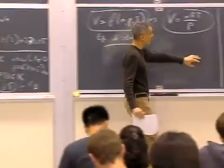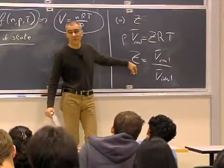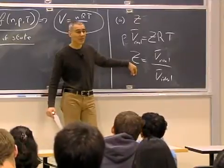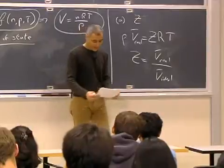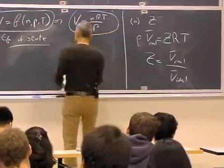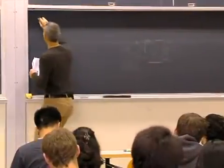And you can find these compressibility factors in tables. You want to know the compressibility factors for water, for steam, at a certain pressure and temperature, you go to a table and you find it. So that's one example of a real equation of state.